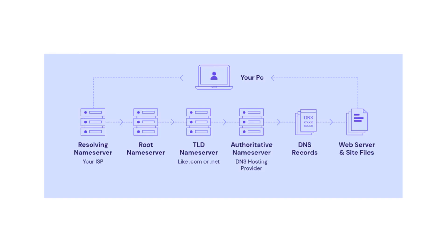The four types of DNS servers involved in the sequence for resolving or mapping a domain name to an IP address are: first, the resolving name server (DNS resolver); second, the root name server; third, the TLD name server; and fourth, the authoritative name server.